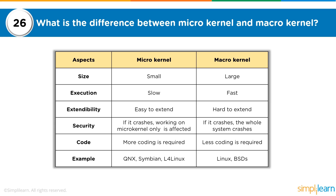Microkernels are used for operating systems where processes are directly handled by the processor and are very small in size, making execution faster. Macrokernels are large because they contain an entire image of the operating system, making execution slower. Microkernels are easy to extend; macrokernels are hard to extend. If a macrokernel crashes, it takes the entire operating system down, whereas with a microkernel only that particular process is affected. Examples of microkernels include Symbian OS and QNX; macrokernel examples include Linux and BSD operating systems.